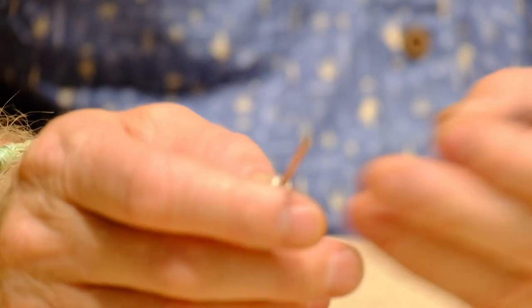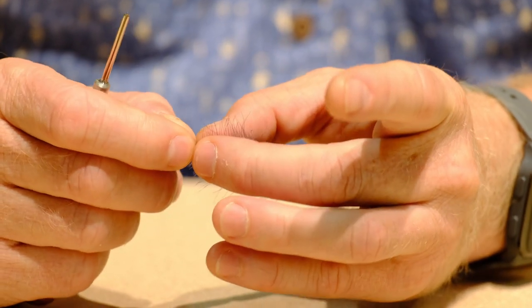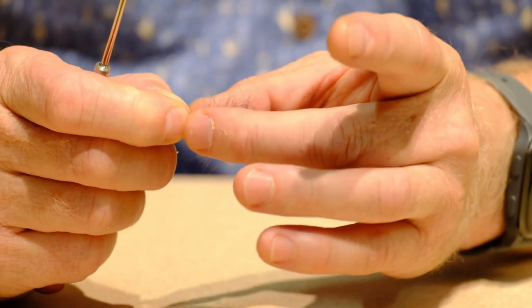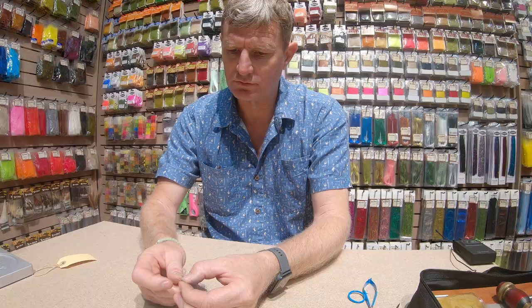What you need to do is grab your selected CDC feather. You want to preen the fibers back 90 degrees to the stem, then insert the tip of the tool.